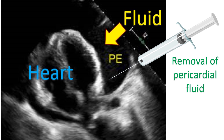Cardiac tamponade needs urgent removal of fluid from the pericardial cavity by needle aspiration, or surgical drainage if the fluid is very thick. Very thick fluid can occur if the collection is due to some types of bacterial infection.